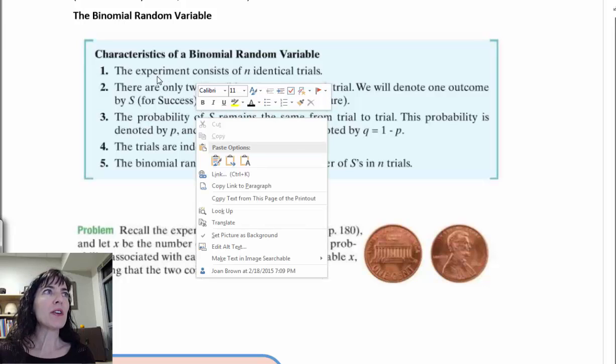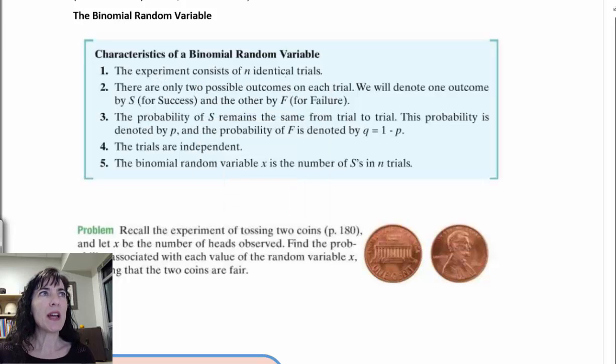First, there is an experiment that has n identical trials. So every trial has to be the same as the others. There are only two possible outcomes, and that's what makes it binomial. That means two. There are two possible outcomes on each trial.